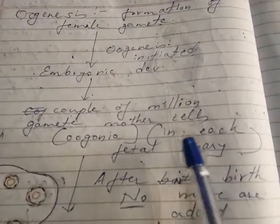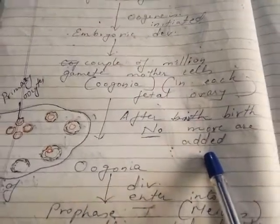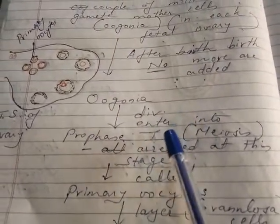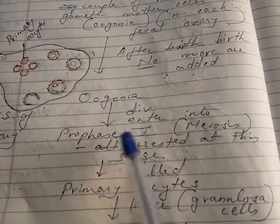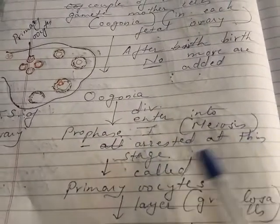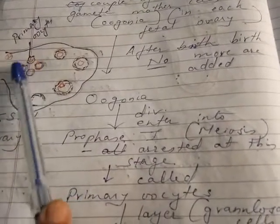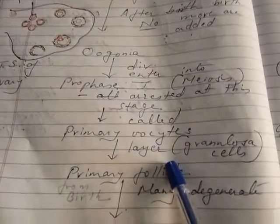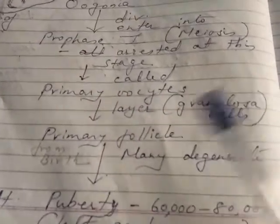Oogenesis takes place during embryonic development and oogonia are formed in each fetal ovary. After birth, no more oogonia are added — only during the embryonic stage are the oogonia formed. These oogonia divide and enter into prophase 1 of meiosis, but get arrested at this stage. They are now called primary oocytes. Around the primary oocyte, a layer of granulosa cells is formed and it is now called the primary follicle.